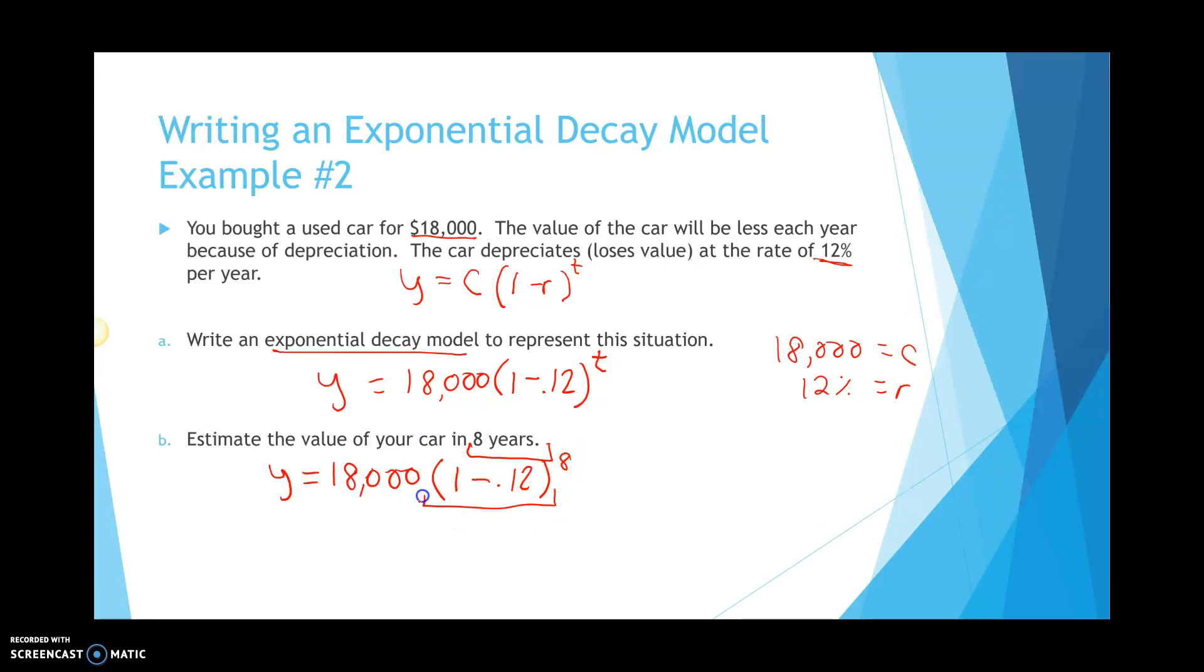First, subtract what's in the parentheses, 1 minus 0.12. That's going to give you about 0.88 raised to the eighth power. Plug that into your calculator. You take that decimal answer and multiply it by 18,000. So, you're going to get y is going to be approximately, round it to the nearest cent, which is going to be about $6,473.42. And since we're working with money, please put a dollar sign in front there. That is your answer. Don't forget your commas as well.